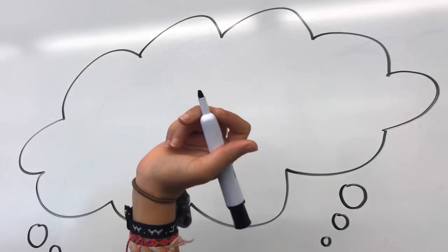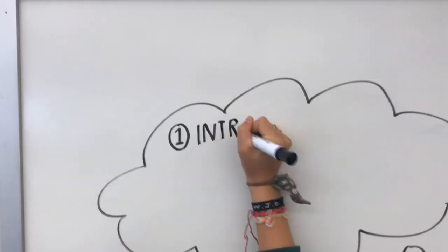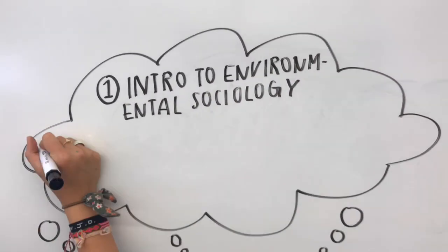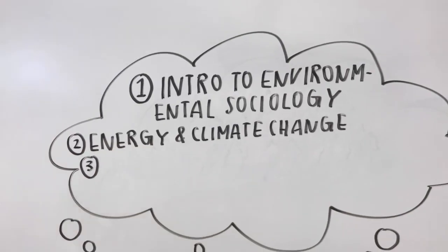The four main ideas we studied over the four weeks of this course include an introduction to the basics of environmental sociology, energy and climate change, food production and consumption, and sustainability.